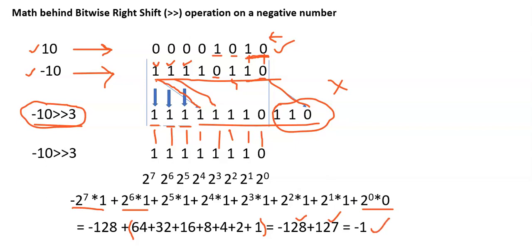Therefore, when minus 10 is shifted by 3 positions to the right, its value becomes minus 1. This is the logic behind the bitwise right shift operation on a negative number.